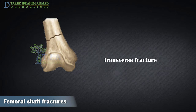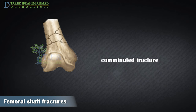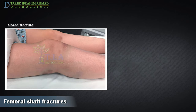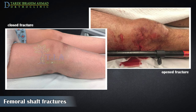The bone can break straight across, a transverse fracture, or into many pieces, a comminuted fracture. Sometimes these fractures extend into the knee joint and separate the surface of the bone into a few or many parts. These types of fractures are called intraarticular. Distal femur fractures can be closed, meaning the skin is intact, or can be open. An open fracture is when a bone breaks in such a way that bone fragments stick out through the skin, or a wound penetrates down to the broken bone.